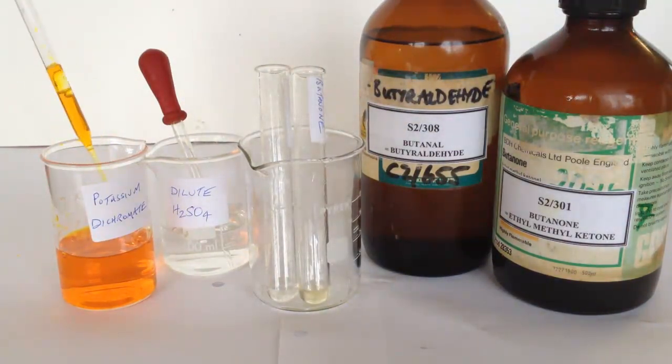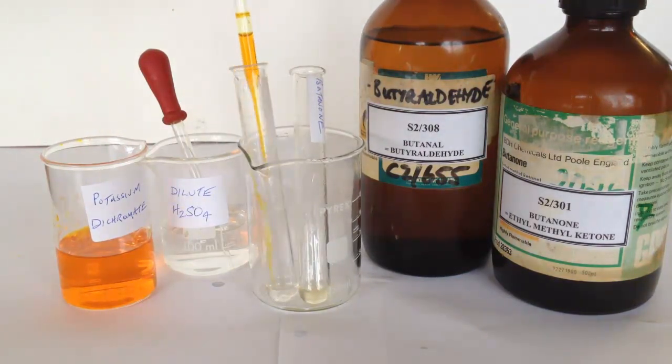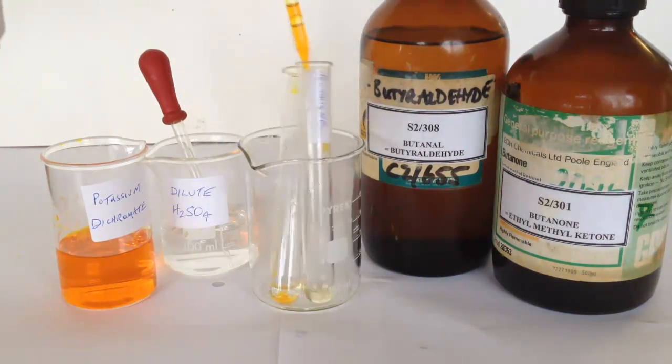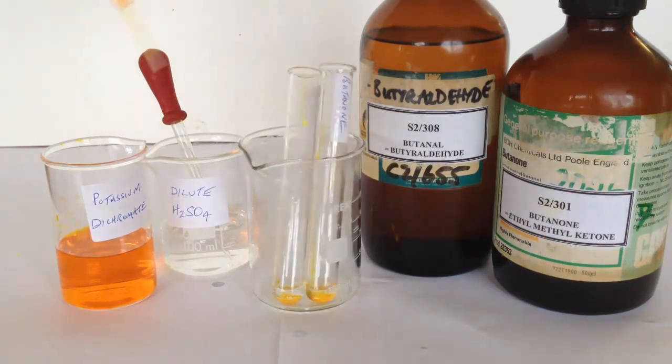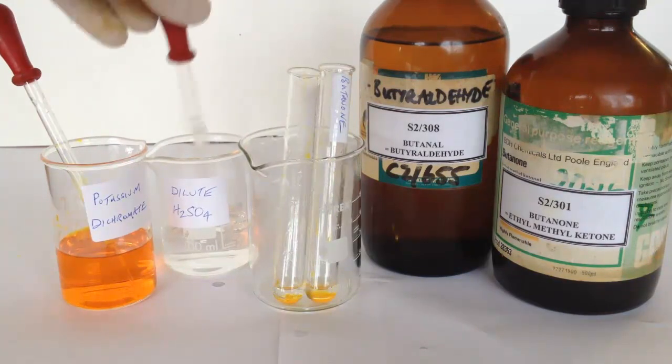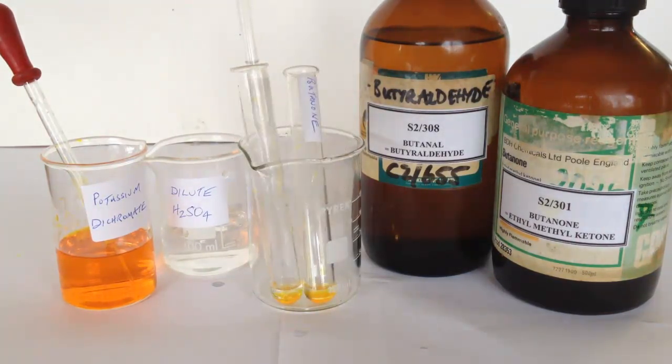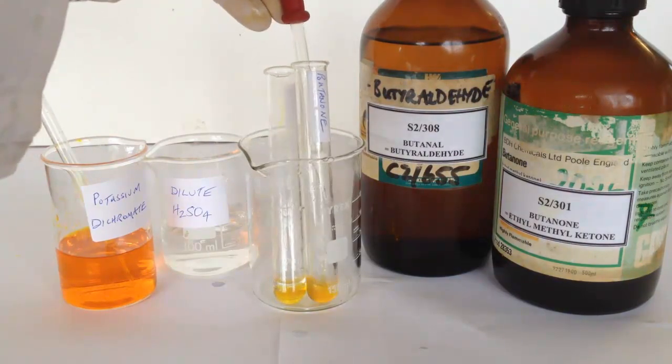I add about one cubic centimetre of an aqueous solution of potassium dichromate to the aldehyde butanal and to the ketone butanone. The acid is used to help the oxidizing agent work, so I add about a cubic centimetre of dilute sulphuric acid to each of the test tubes.